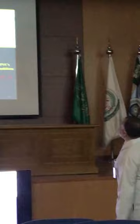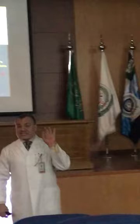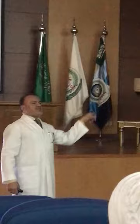Number four: R on T. The R wave of the PVC normally comes after the T wave of the previous beat — this is not serious. But if it comes on the T wave, it means the beat hits the heart during the previous repolarization phase, which is serious. During the T wave, the heart is relaxing and recharging. If this beat comes on the T wave, the rhythm can convert to VF or VT.